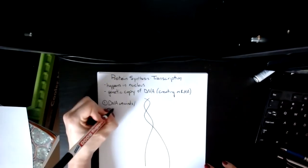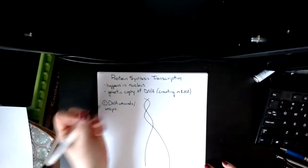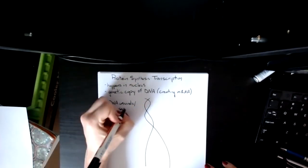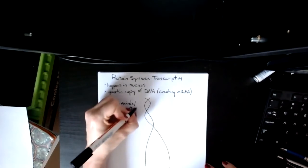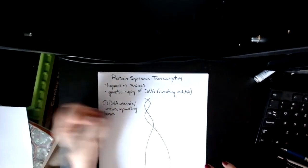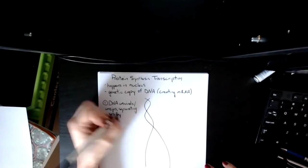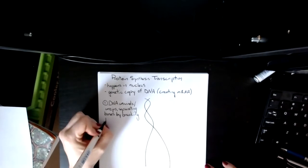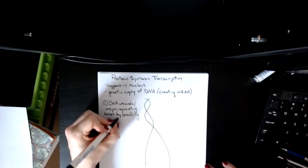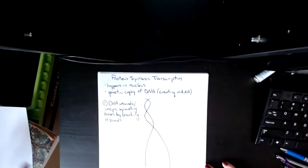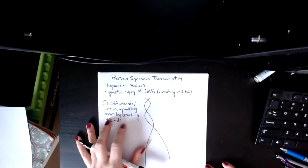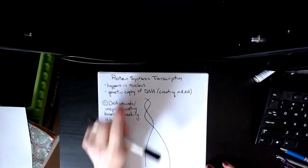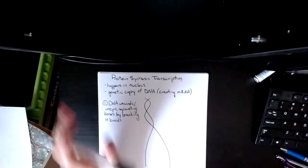When you do that, the idea is that what you are breaking is you're separating the nitrogenous bases by breaking hydrogen bonds. In DNA replication there are three enzymes that you should know. In transcription there's only one, and that is RNA polymerase.